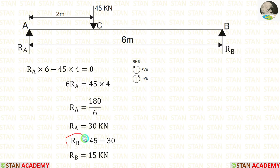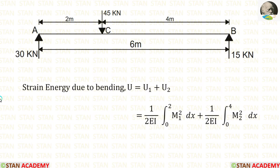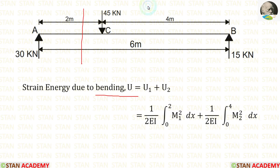Then let us calculate Rb. We can easily calculate Rb by using the total load of 45 kN: 45 minus Ra gives Rb = 15 kN. Now let us calculate the strain energy due to bending. For this, we need to make two sections — one before the point load and one after — splitting the strain energy into U1 and U2.